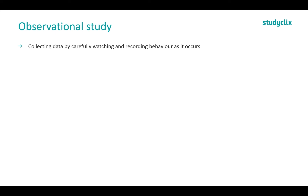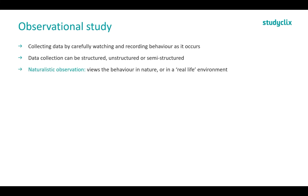Next, we have observational studies. This is collecting data by carefully watching and recording behaviour as it occurs. Data collection can be structured, unstructured or semi-structured — we could sit there with a checklist, write down what we see, or use a semi-structured table format. We also have naturalistic observation, where you observe behaviour in nature or a real-life setting — for example, sitting outside a coffee shop and writing down the behaviour of people passing by. We also have what we call a contrived environment, which uses an artificial setting — for example, a fake classroom where a child is observed through a two-way mirror.